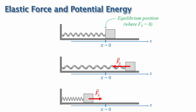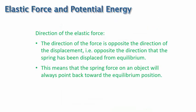Based on these observations, we can write down a couple of rules about the direction of the elastic force. The direction of the force is opposite the direction of the displacement, i.e. opposite the direction that the spring has been displaced from equilibrium. This means that the spring force on an object will always point back toward the equilibrium position.